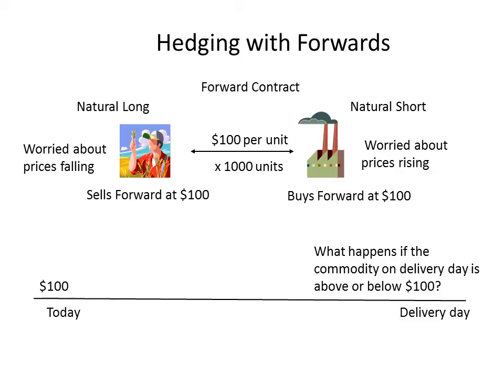In that example, the manufacturer would be somewhat pleased with their hedge outcome because they've locked in an agreed price of $100. The farmer, by contrast, would be somewhat perturbed because they have an obligation to deliver their crops at $100, not being able to achieve the local price of $150. By contrast, if in the local market prices were at $50, then the farmer would be very pleased with their hedge outcome.